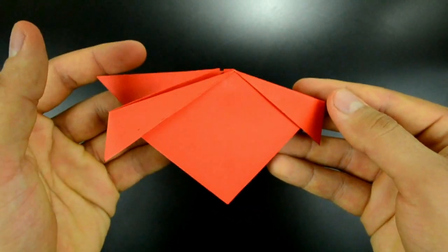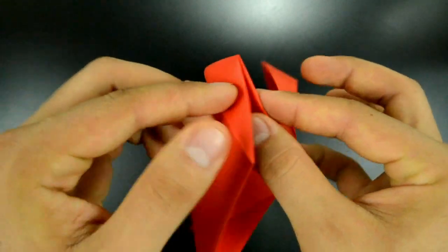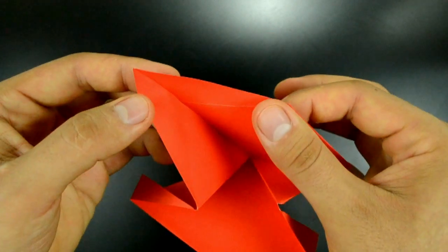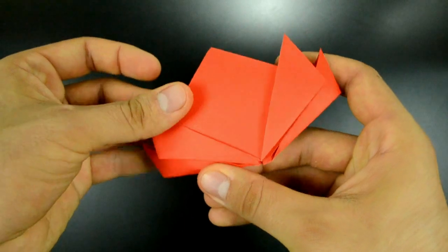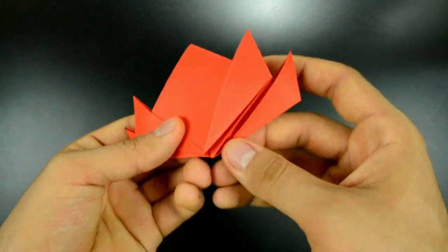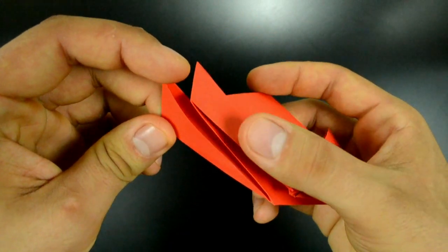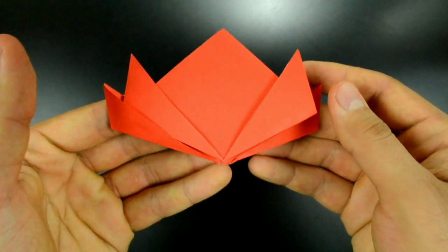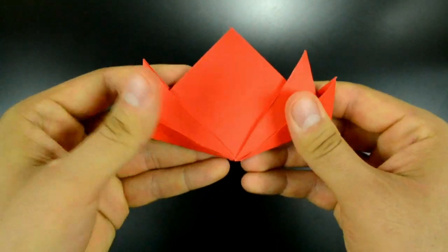And on the first layer, with the larger folds, reverse using the same logic. Reinforce and arrange a little. And on the end, just fit the first layer inside the second. That way. The same on the other side. And our bookmark is ready.